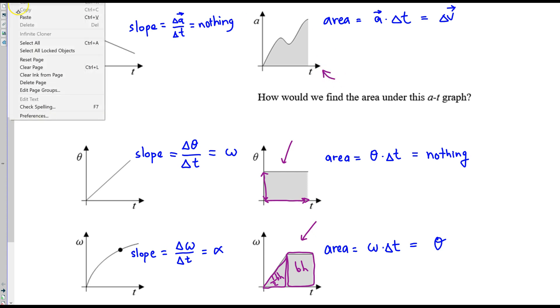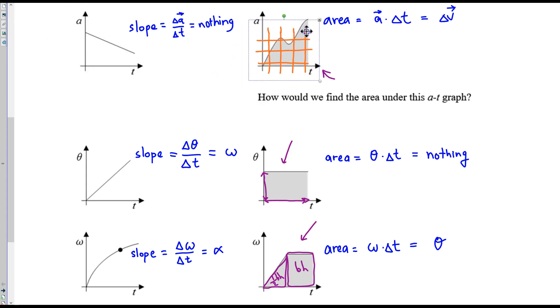But what if you saw something like this? That would be a little bit more complicated, and to tackle it, you would need grid lines. Here's what the process would look like. You would find out, well hey, one box has an area of, I don't know, maybe it's two seconds across, and one box has a height of two meters per second squared. So one box would be four meters per second. Getting that? Well, it's base times height.